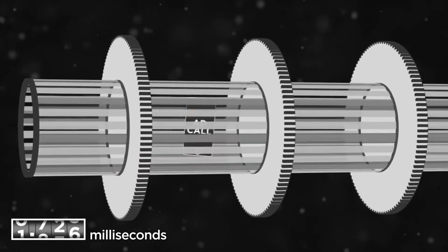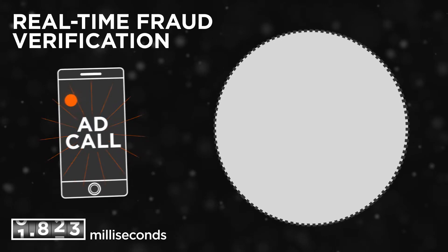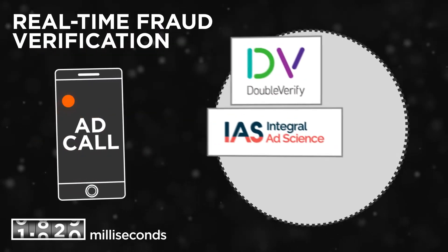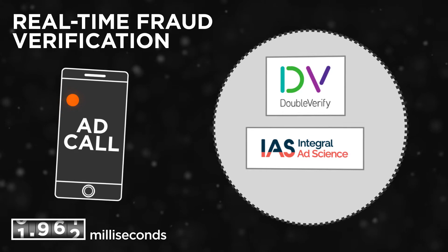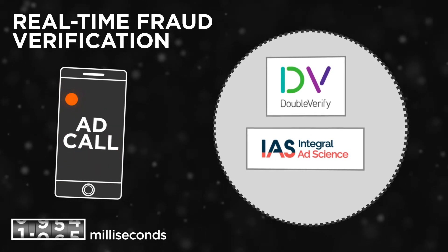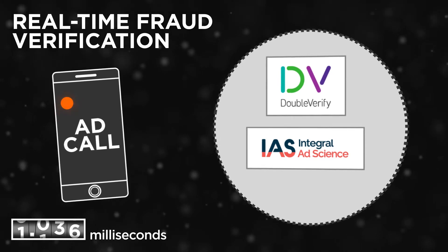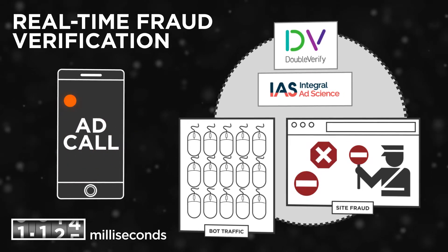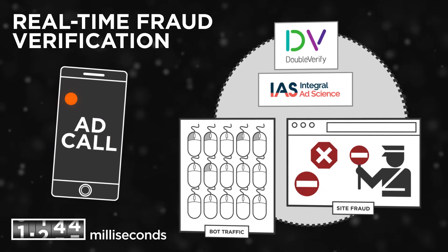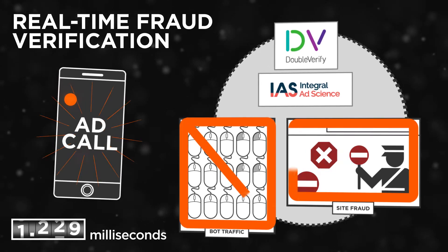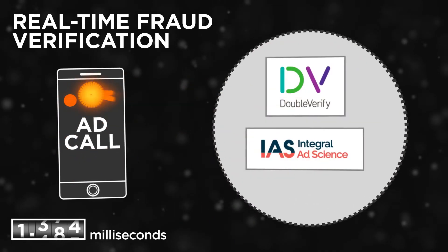Now that this ad has successfully passed through the brand safety filter, it will move on to the next protection filter, real-time fraud verification, which is accompanied by a fraud-free guarantee. This guarantee ensures that our clients will never have to run or pay for fraudulent inventory. If DoubleVerify or Integral Ad Science detect the presence of bot traffic or site fraud across web and in-app environments, we will not bid on the impression.